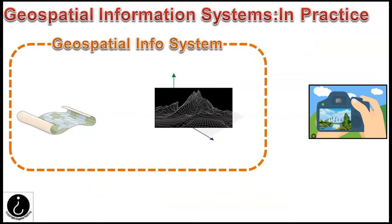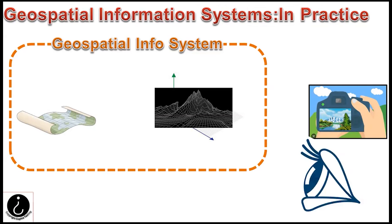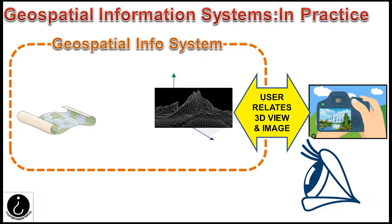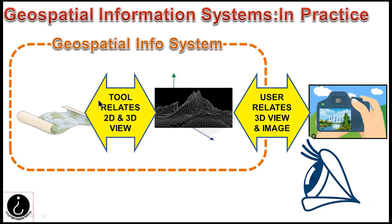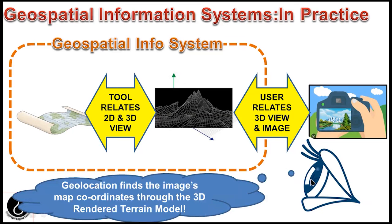The geospatial information system relates the mesh to the map. But we need something else — we haven't got AI fully behind this problem yet. We need a person to relate the image to the 3D model. Anything that makes the 3D model look more like something we can recognize with our fallible human eyes is going to make the geolocation job much easier. The relationship between the 3D model and where you are on the map is something the geospatial information system deals with very well, so we need to make that recognition step as efficient as possible.